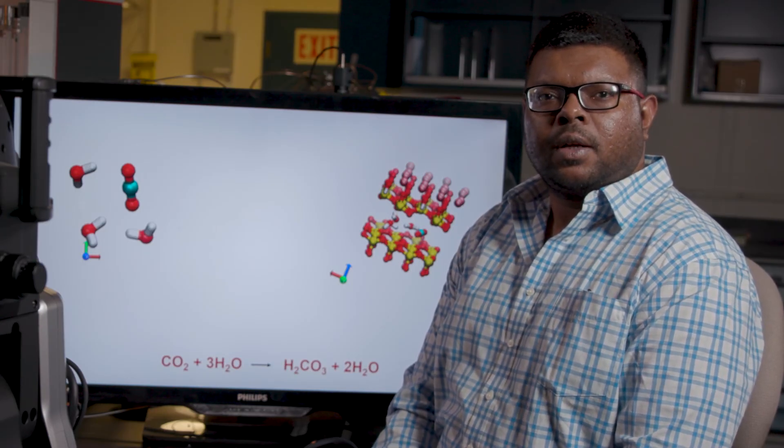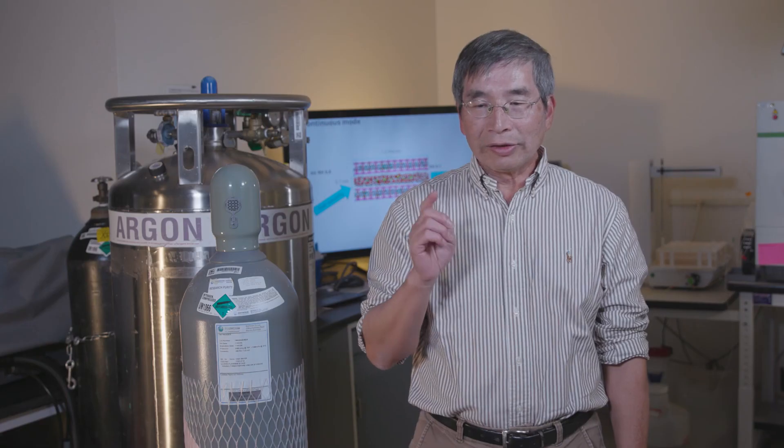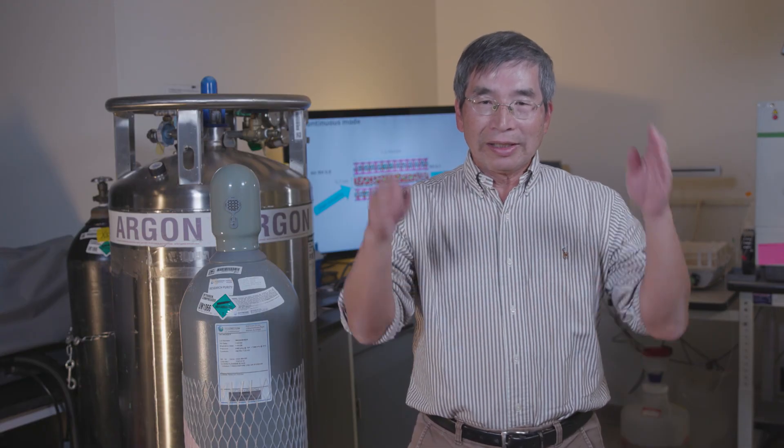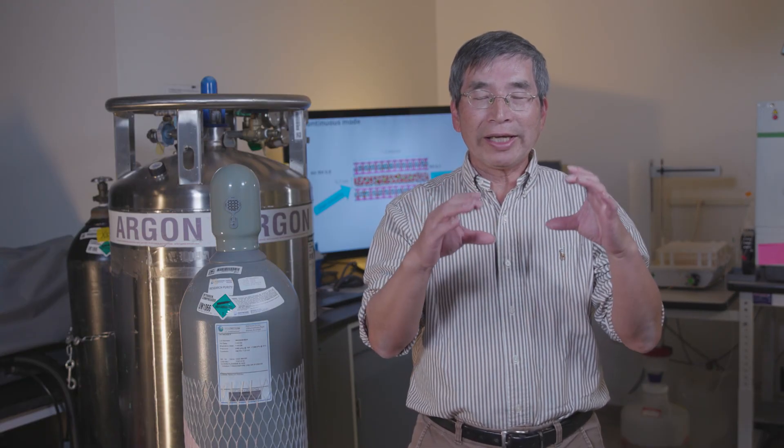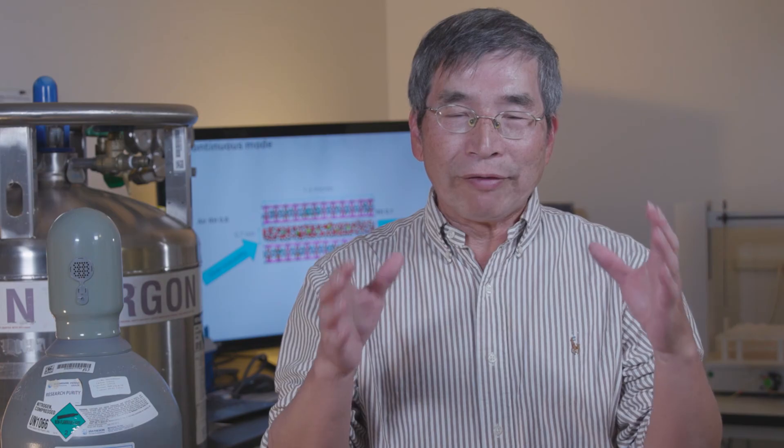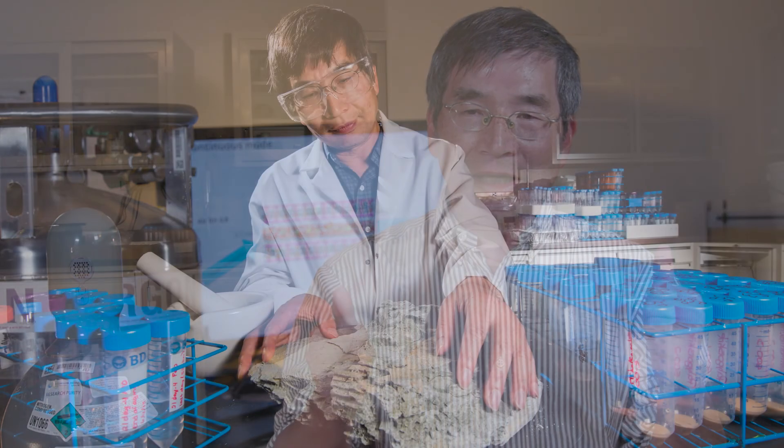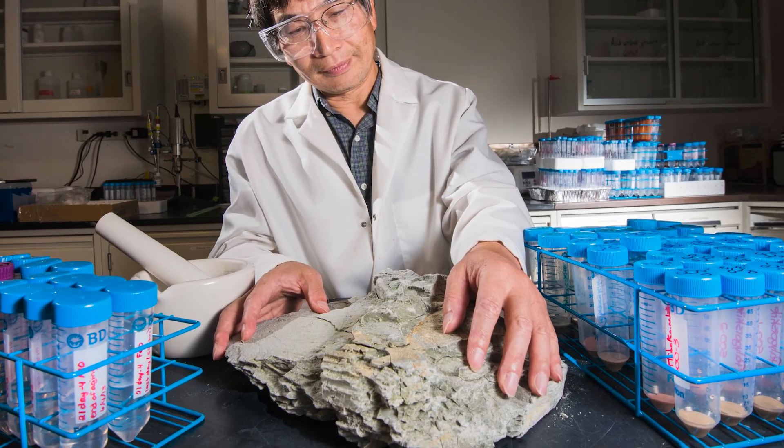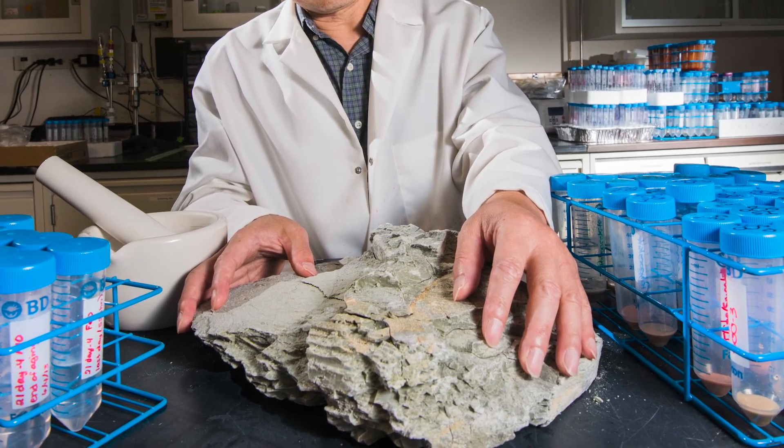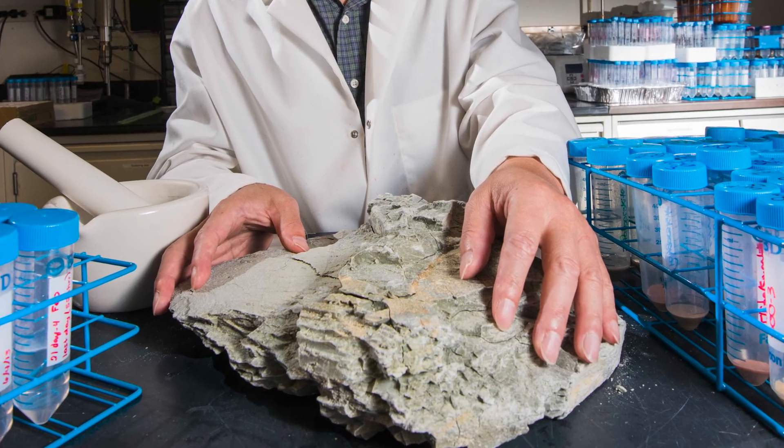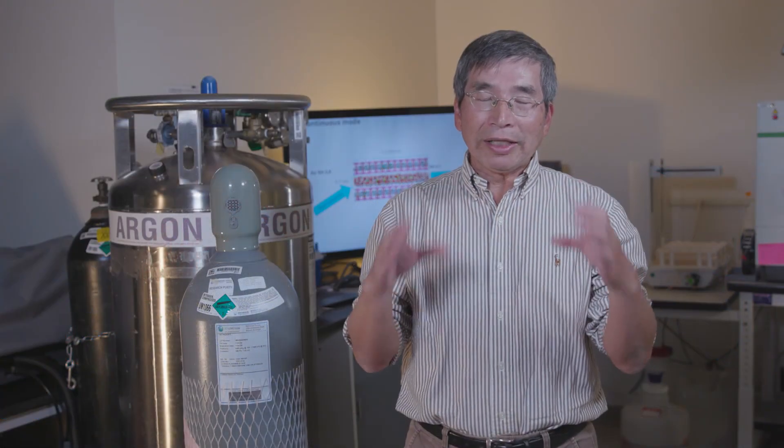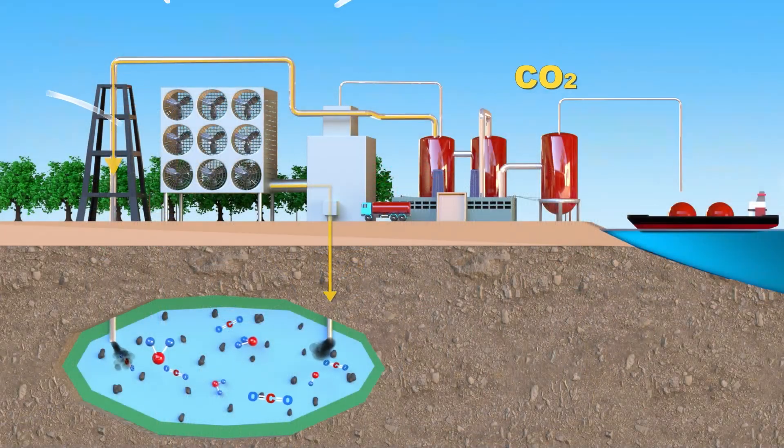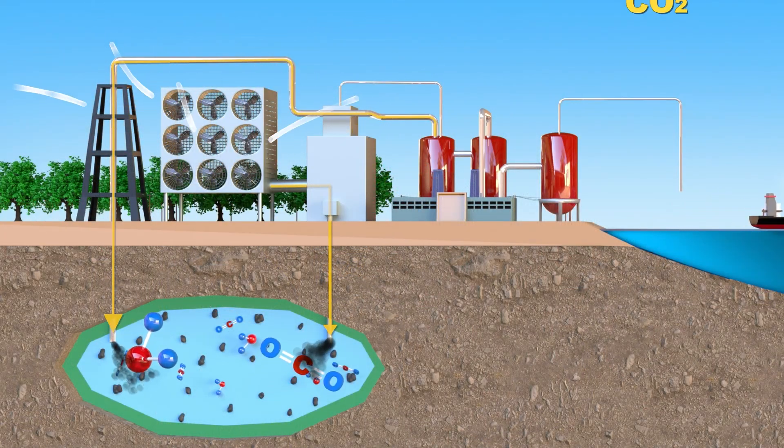The nice thing about this technology is that by controlling relative humidity across the column, we can minimize the energy input for operating the whole system, which reduces the cost. The material we use is very inexpensive because it's a natural material that's abundantly available. Overall, our technology is much less expensive than other existing technologies.